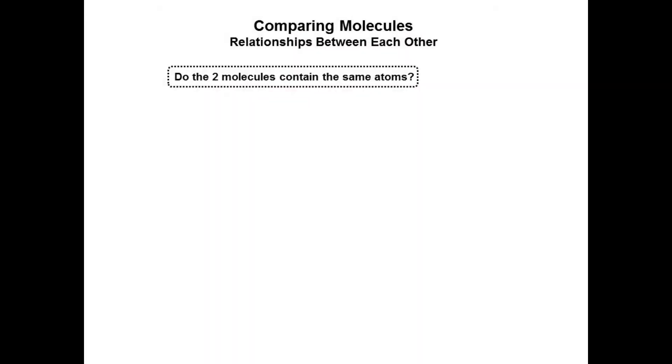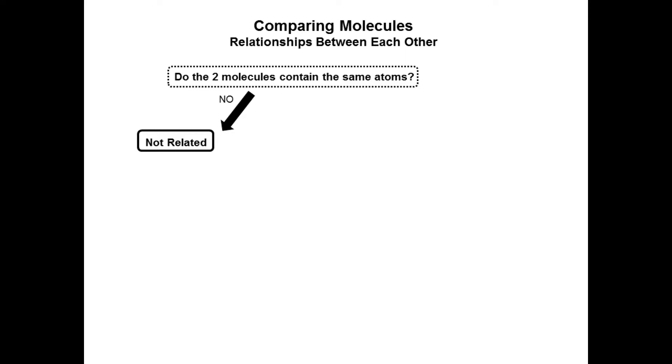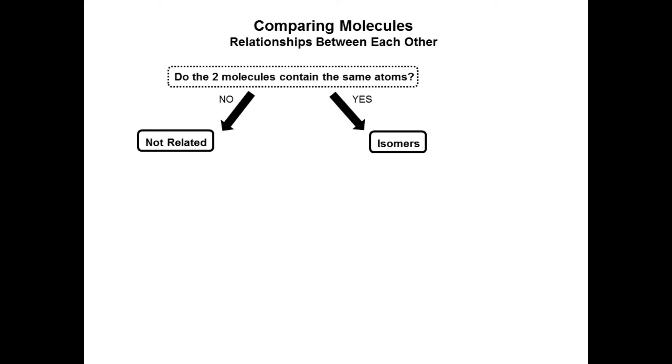Let's look at some terms comparing molecules. If two molecules have different atoms, they are considered not related. If they have the same atoms, they are called isomers. There are two different types of isomers: stereoisomers and constitutional isomers.